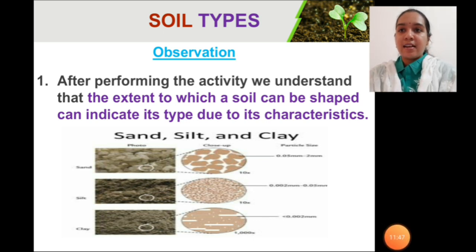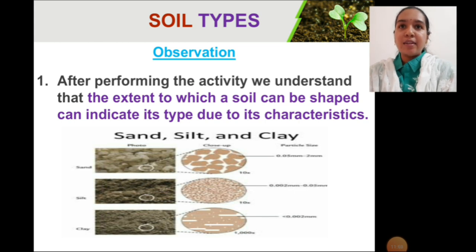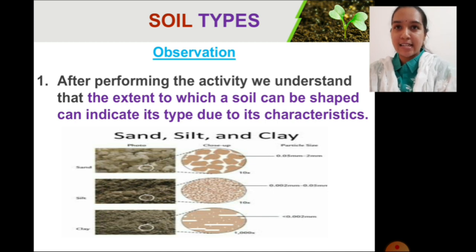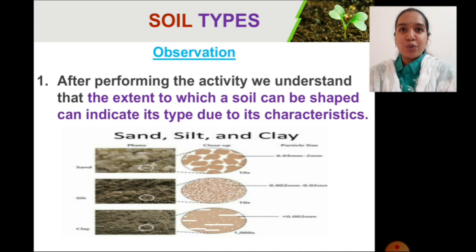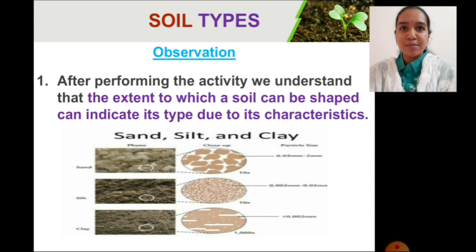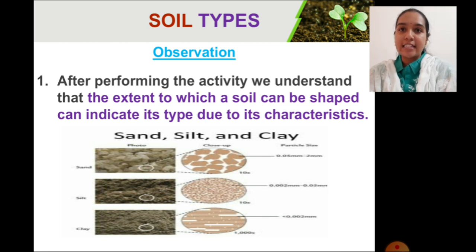After performing the activity, you will understand that the extent to which a soil can be shaped indicates its type and unique characteristics. If you have been able to achieve all the shapes — ball, cylinder, and ring — from the soil sample you collected, you can assume it to be clay soil. For other soil types, achieving these shapes would be more difficult or the results would differ.